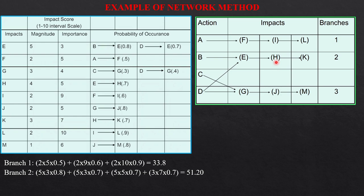And H is 3, 4 into 5. And the probability of H due to E is 0.7. So I multiply by this point. Similarly, K is taken. And the value of branch 2 has come to 51.2.